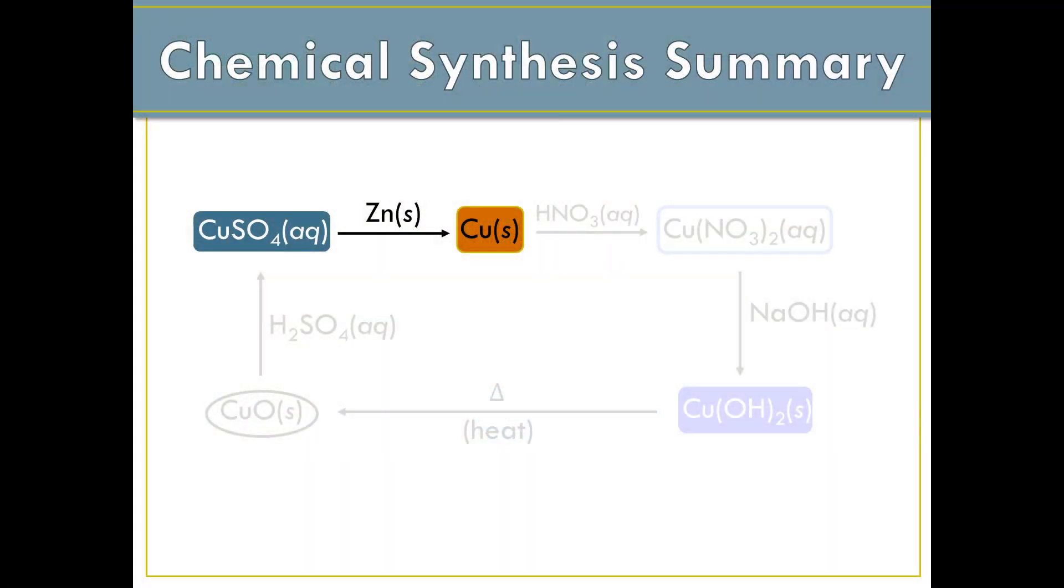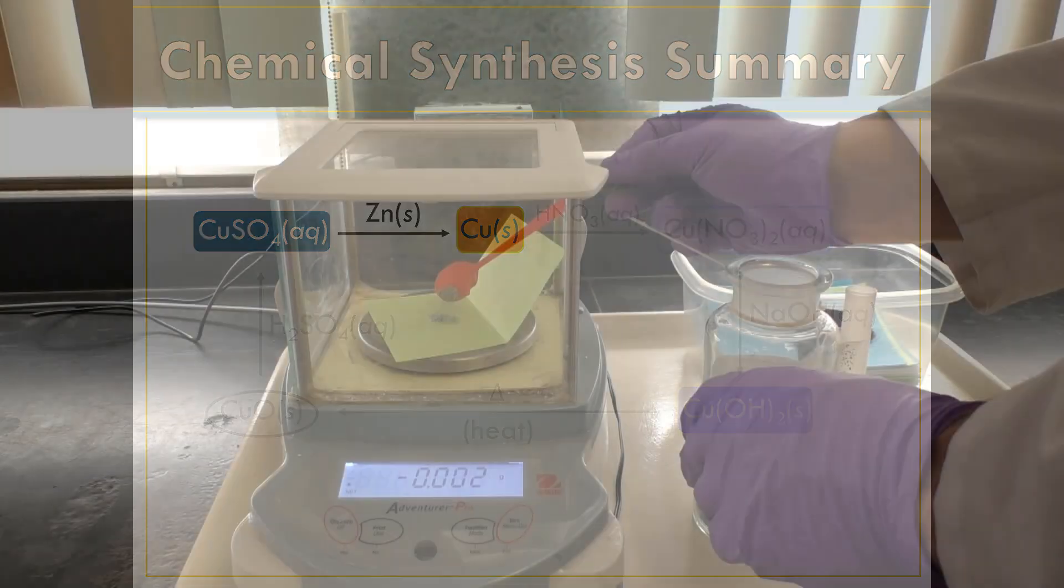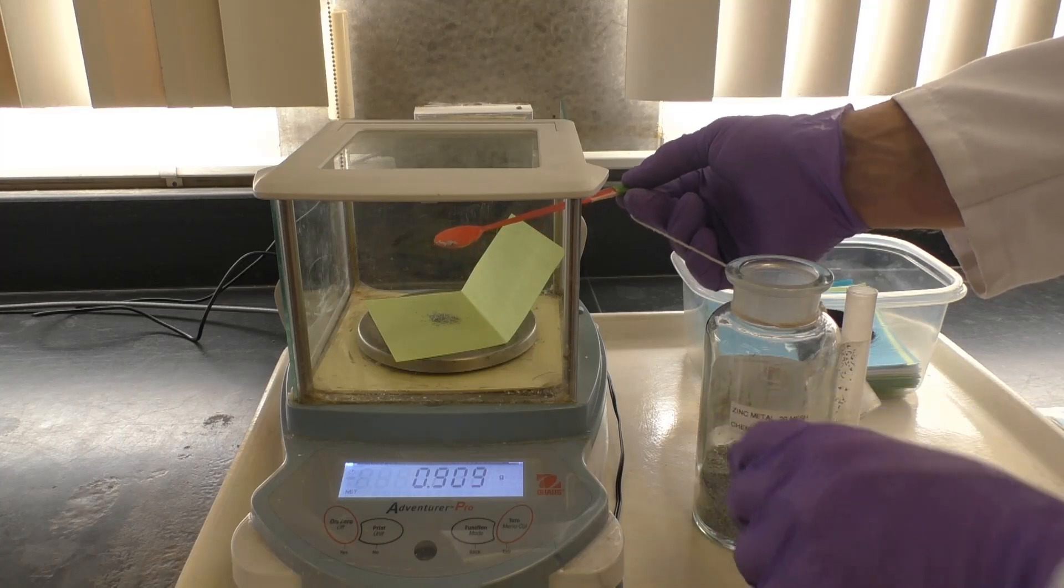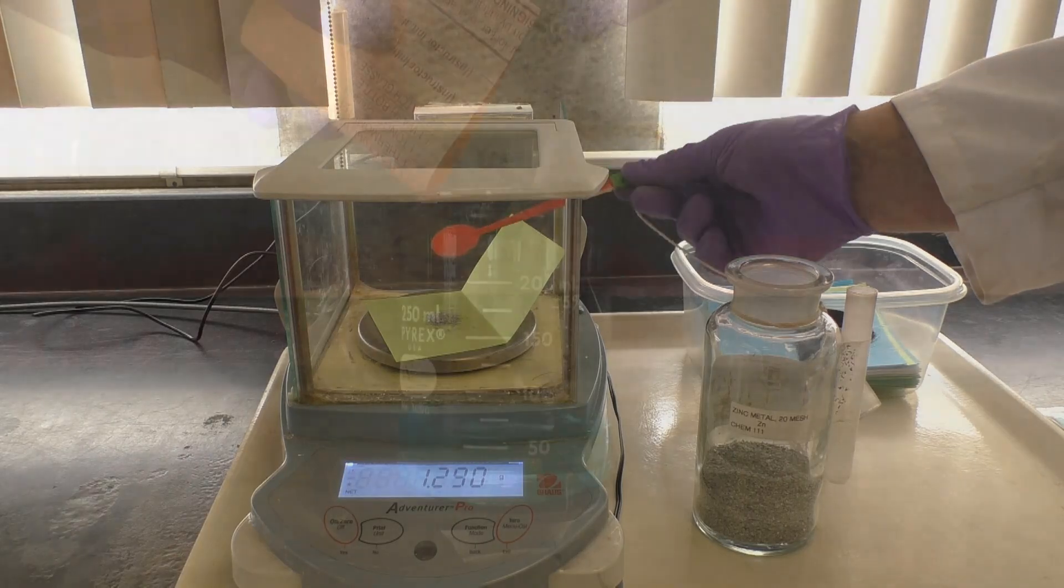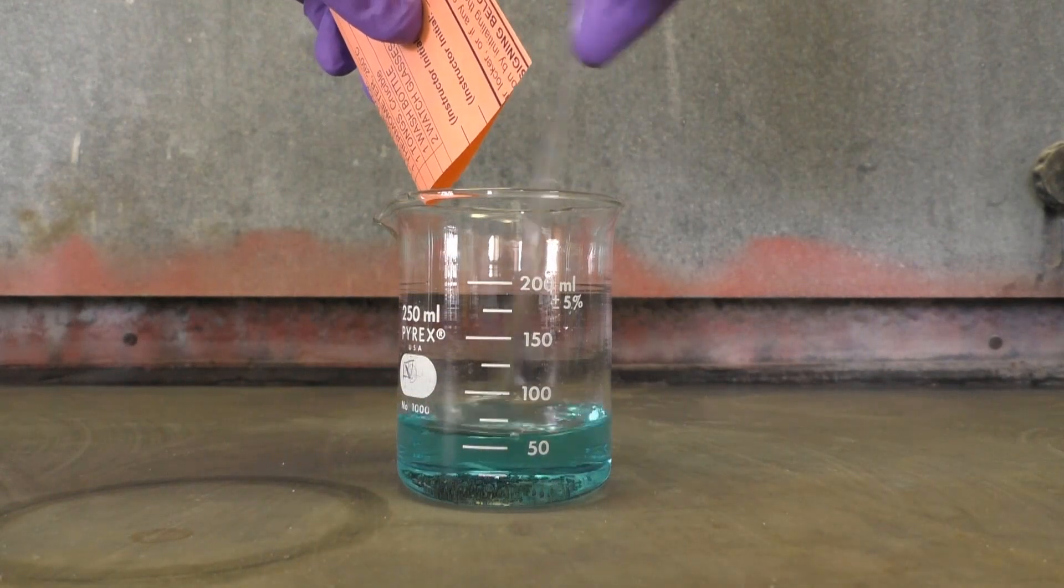The final step of our synthesis is reduction of your copper-2-sulfate to copper metal by use of zinc. The copper changes oxidation state from plus 2 to 0 in this reaction. Thus, this is a redox reaction. After weighing out about 1.5 grams of zinc turnings, add this to your copper-2-sulfate.